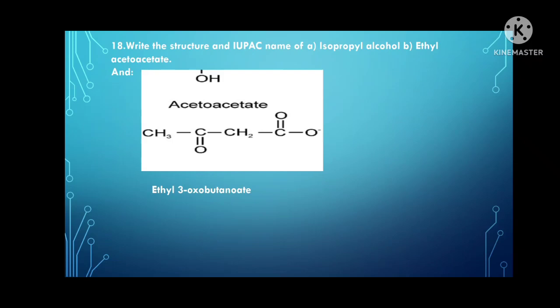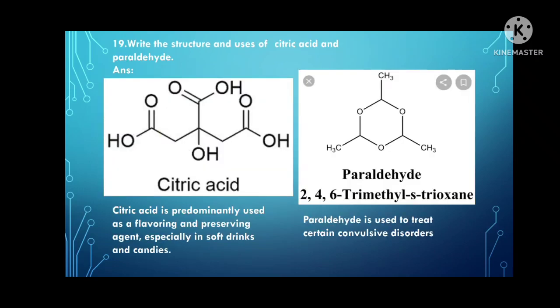Write the structural uses of isopropyl alcohol and ethyl acetoacetate. Isopropyl alcohol structure was given earlier. The structure of ethyl acetoacetate is shown, with IUPAC name ethyl-3-oxobutanoate.